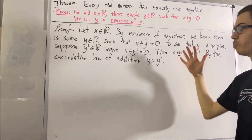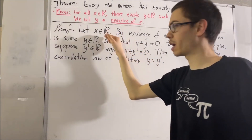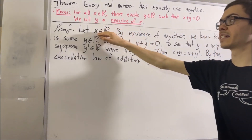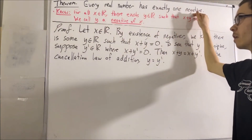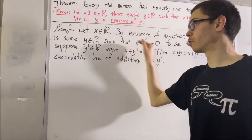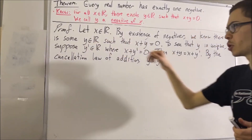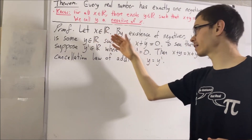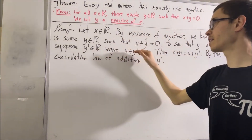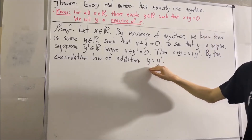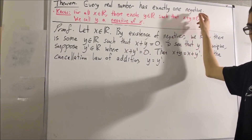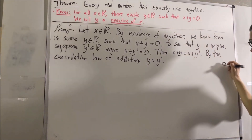So, putting this all together, we gave ourselves an arbitrary real number x, and our goal was to deduce that x has exactly one negative. Well, we know that x has at least one negative — call it y. But to show that y is the only negative of x, we proved that every real number that satisfies the same condition as y is equal to y. That proves that x has exactly one negative, and so this completes the proof.